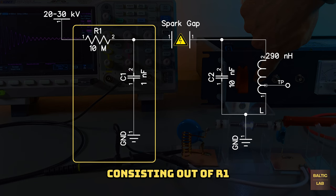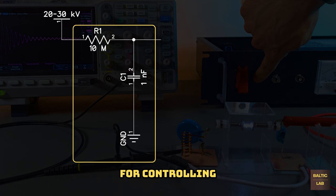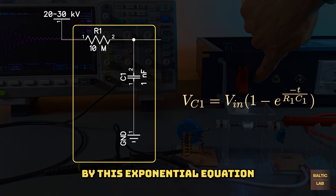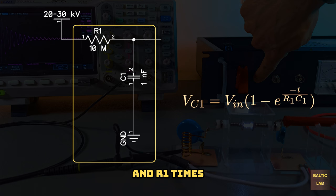The RC charge circuit consisting of R1 and C1 is responsible for controlling the spark gap's triggering frequency. After applying the supply voltage, the voltage across C1 is determined by this exponential equation, where VC1 is the voltage across C1, VIN is the supply voltage applied to the circuit, T is the time in seconds, and R1 times C1 is also called the time constant, in this case 10 milliseconds.